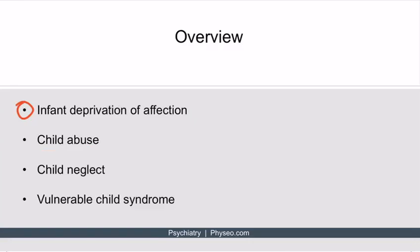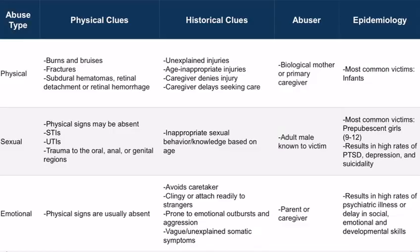Now that we've covered infant deprivation of affection, let's dive into child abuse. There's significantly more information you need to know about child abuse than the other three conditions. To help consolidate that information, we have a table that compares and contrasts the typical findings, abuser demographics, and important epidemiological facts associated with each type of child abuse. Let's start by discussing physical child abuse.